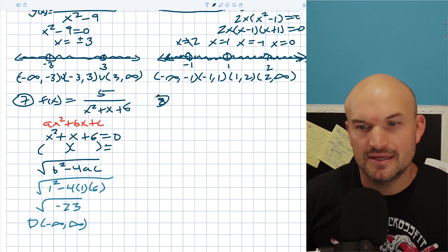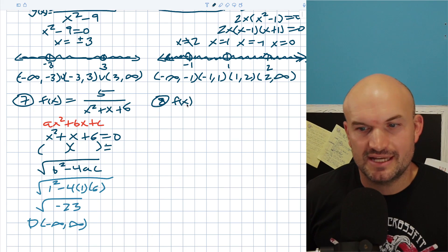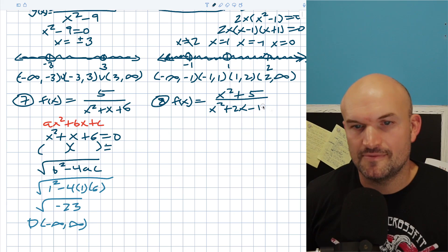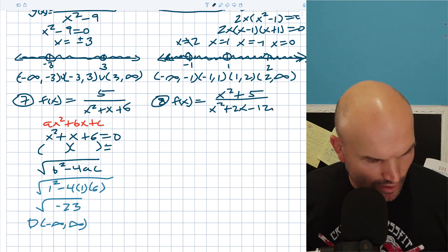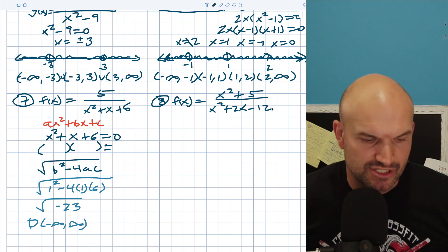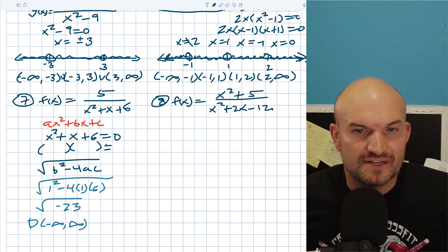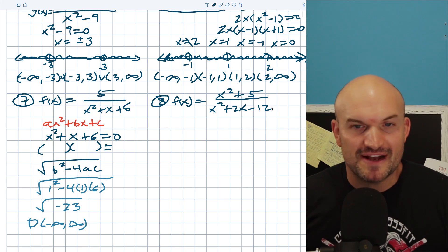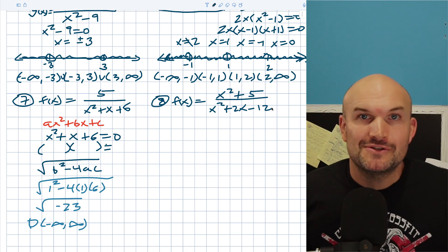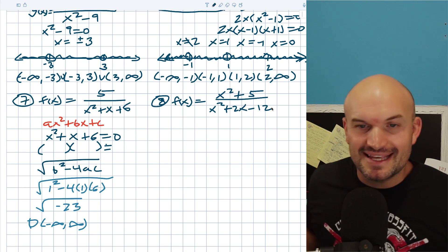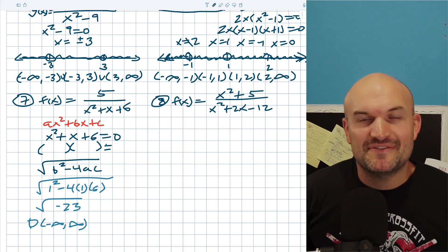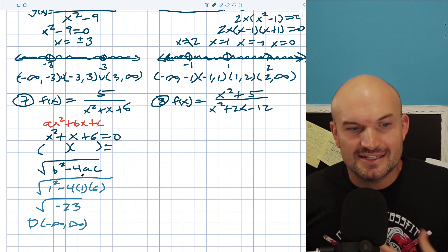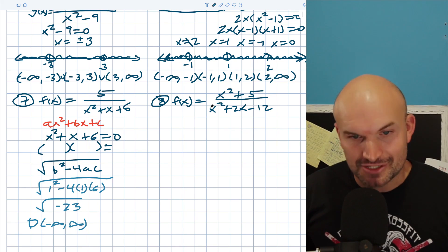Example eight: f(x) = (x²+5)/(x²+2x−12). Trying to factor x²+2x−12: we need two numbers multiplying to −12 and adding to 2. Six and two differ by four; four and three differ by one — neither works. Being non-factorable over rational numbers doesn't automatically mean imaginary solutions; it could be real irrational numbers. We need to check the discriminant.